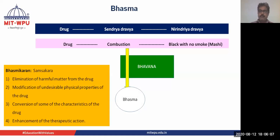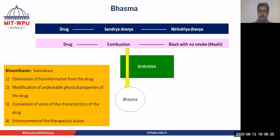But if we take a drug and treat it with some herbal juices or whatever is mentioned in the Ayurvedic text, we call it the bhavana dravya. So when we take a drug and treat it with the bhavana dravya and apply heat, it converts into Bhasma formulation. The process of conversion or formation of Bhasma from drug metals or minerals is called Basmikaran.